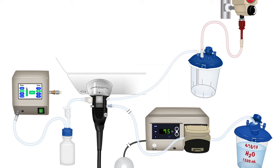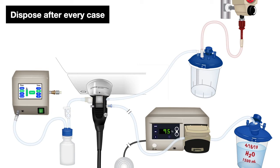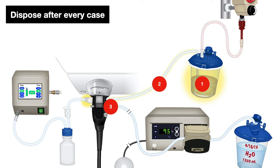Let us look at all the different devices, containers, and tubing that we use and what we do in terms of disposing them. Certain devices, containers, and tubing need to be disposed of after every case. These include the suction canister, suction tubing, and auxiliary water jet connector, which should be replaced for the next case.